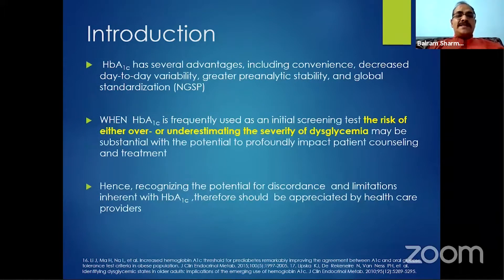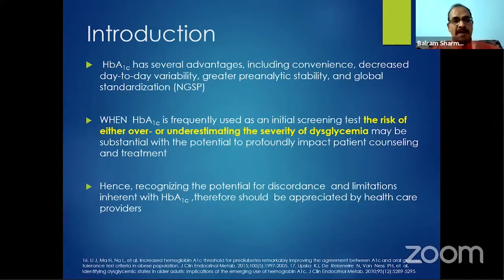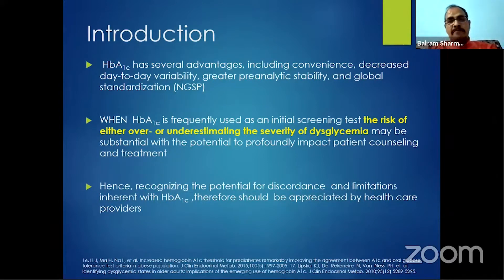HbA1C has several advantages over the OGTT, like convenience, decreased day-to-day variations, greater pre-analytic stability, and global standardization via NGSP standards. But when HbA1C is used as an initial screening test, there are risks of either overestimation or underestimation of the severity of glycemia, which can profoundly impact decision-making and patient counseling.